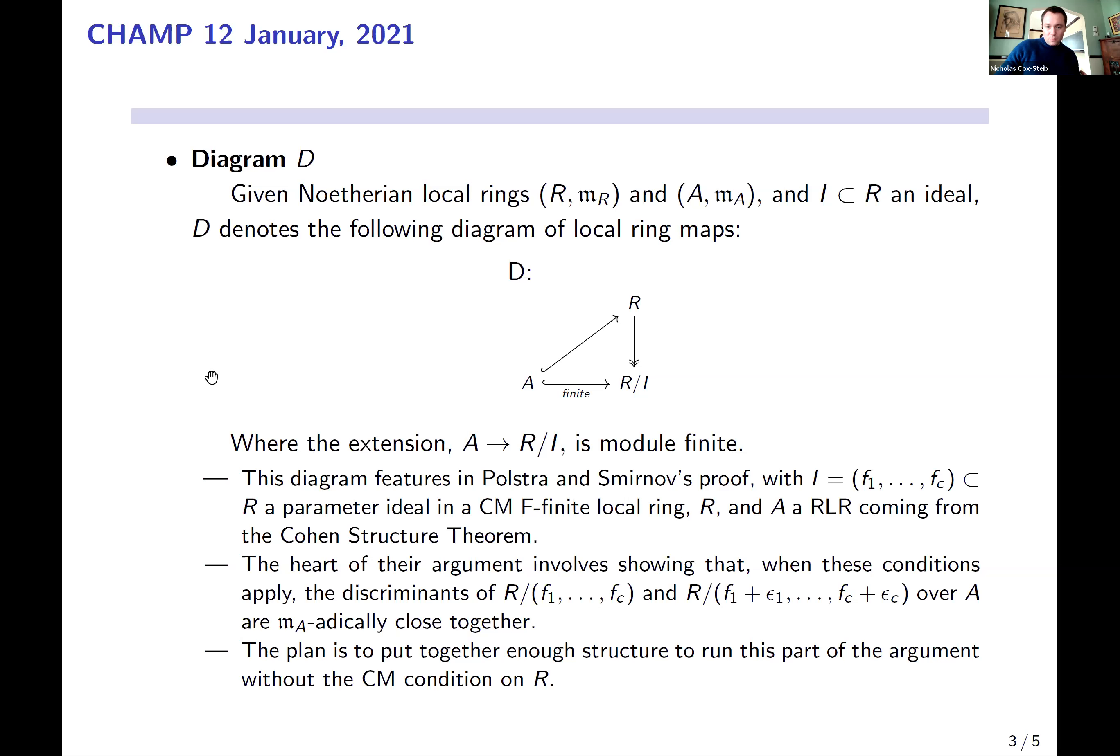I'm also going to talk about, and I wanted to mention here, that the conditions that are placed on this ideal I being perturbed in this result are pretty strong, right? It's a parameter ideal, but it's a parameter ideal inside of a Cohen-Macaulay ring. So it's generated by a regular sequence. Outside of the Cohen-Macaulay case, it's definitely necessary to put some kind of nice condition on I.